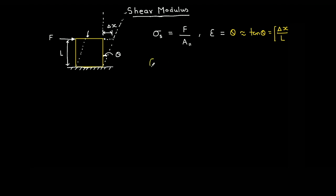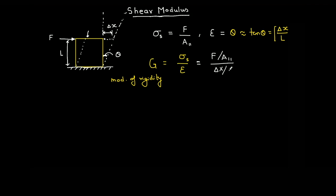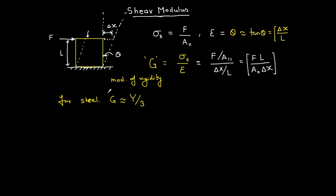The ratio between shear stress and shear strain is called the modulus of rigidity. This is very important because it takes three times less effort to break a solid like this than by stretching and compressing. The formula is F·L divided by (parallel area × delta x). For the same material like steel, G and Y are different — roughly G is approximately Young's modulus divided by three.